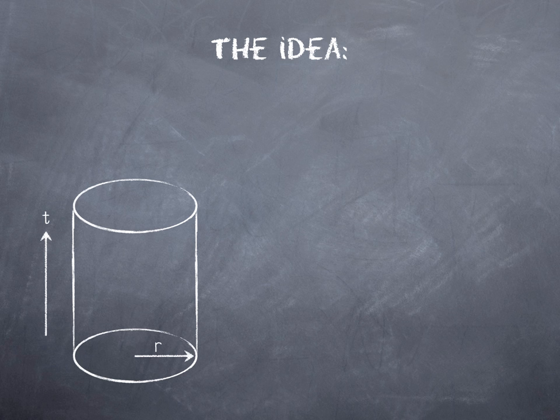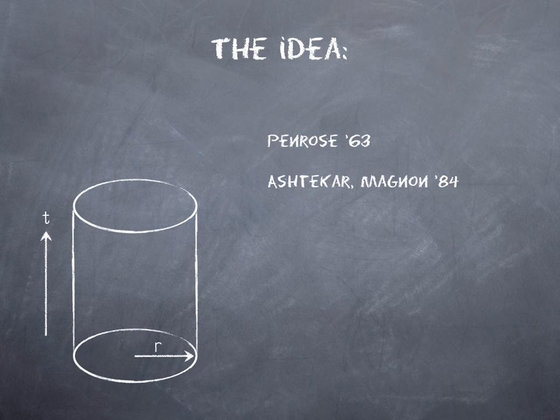So what is the idea of how we are going to solve this problem? We are going to take anti-de Sitter space depicted again here and we are going to conformally compactify it. The idea of conformal compactification goes back to Roger Penrose in the 60s and it was applied to the context of AdS by Ashtekar and Magnon.